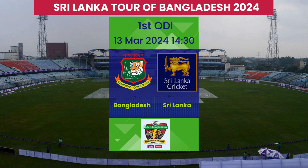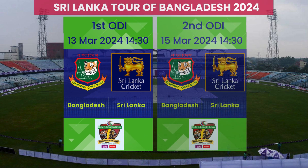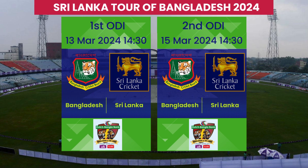The teams will then travel to Chattagram to play three one-day internationals. The first ODI will be played on Wednesday 13th March at the Zahur Ahmed Chowdhury Stadium, Chattagram, starting at 2:30pm Bangladesh time, which is 2pm in Sri Lanka and India. The second ODI follows on Friday 15th March at the same start time.